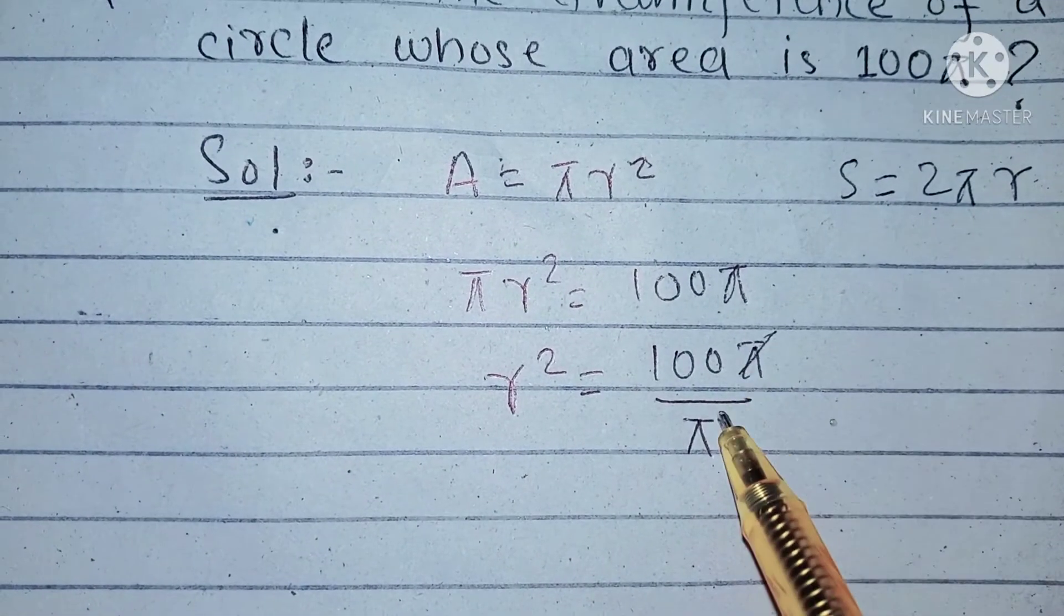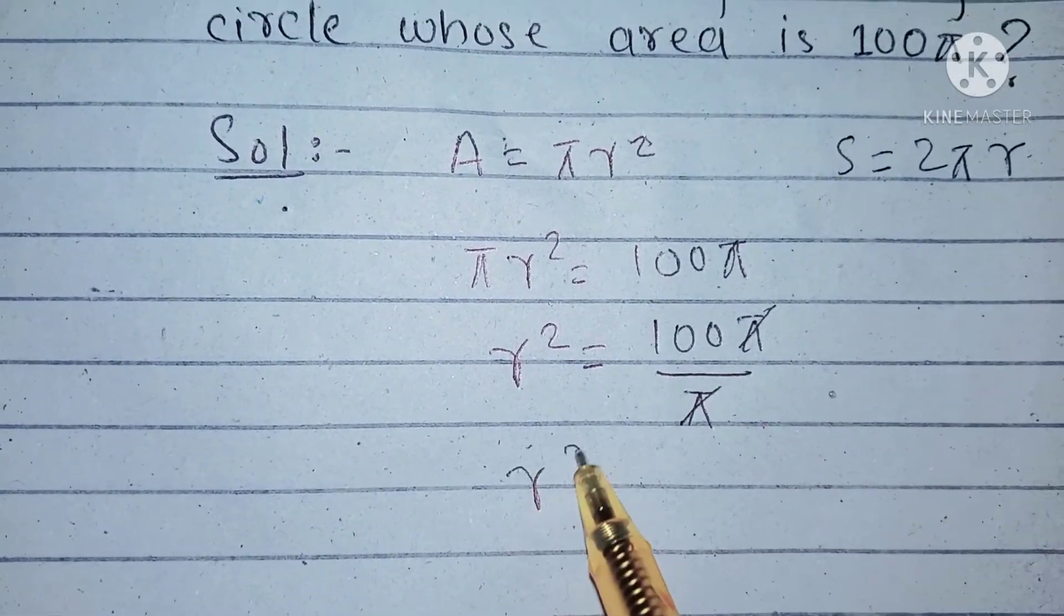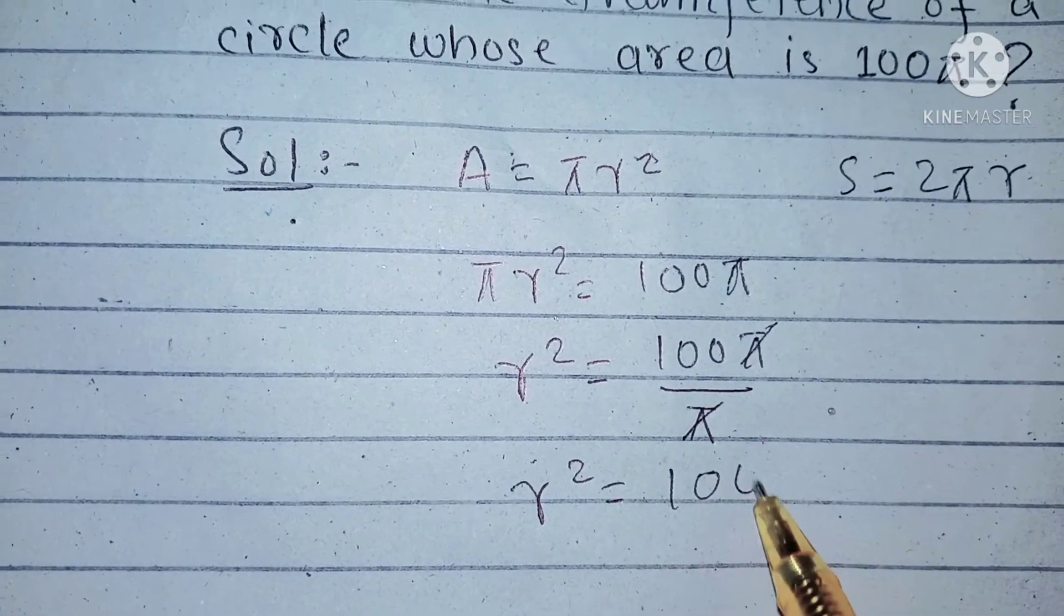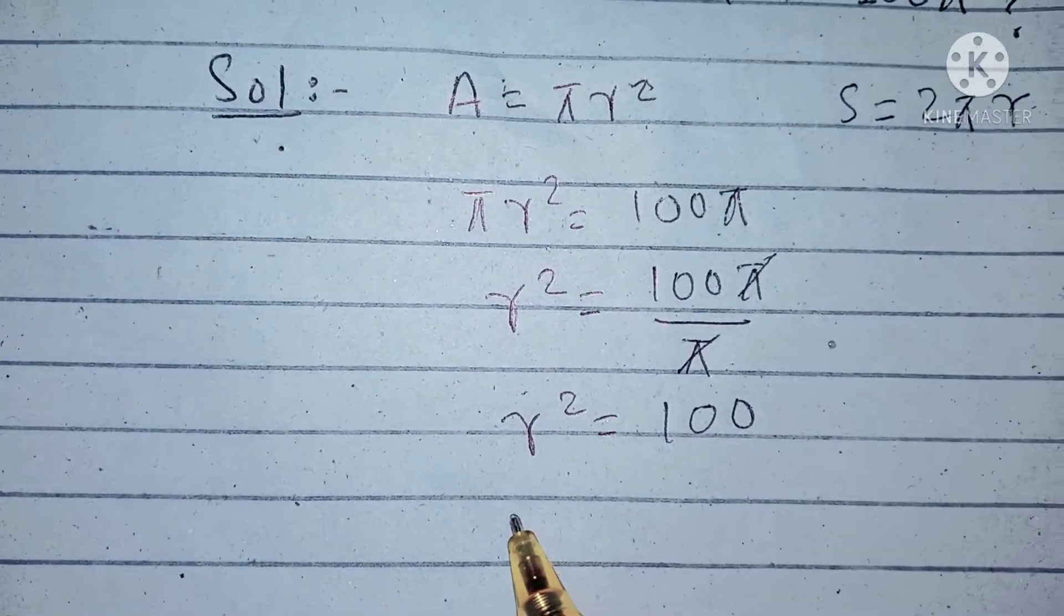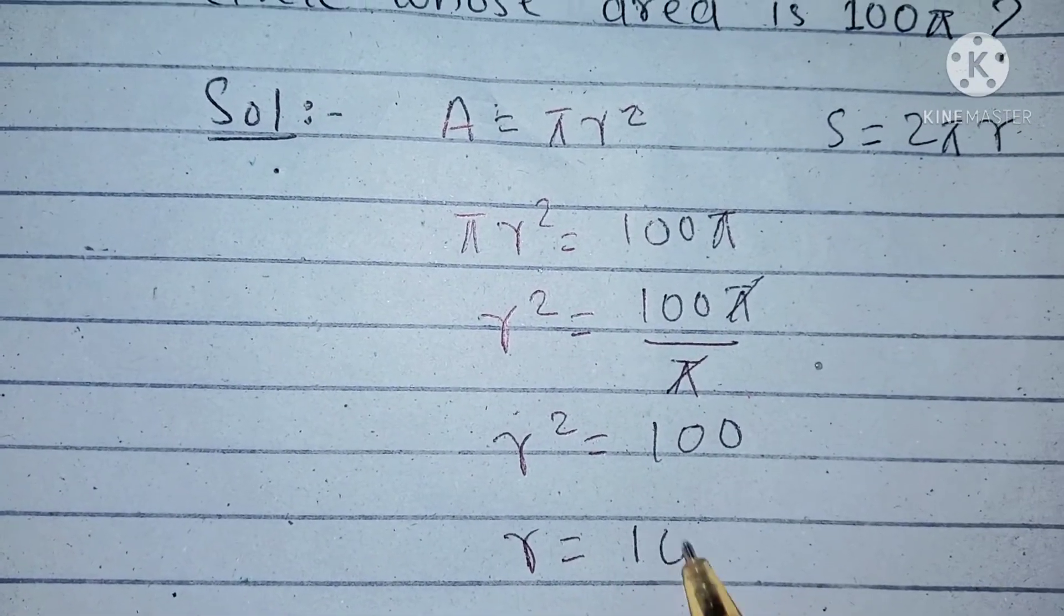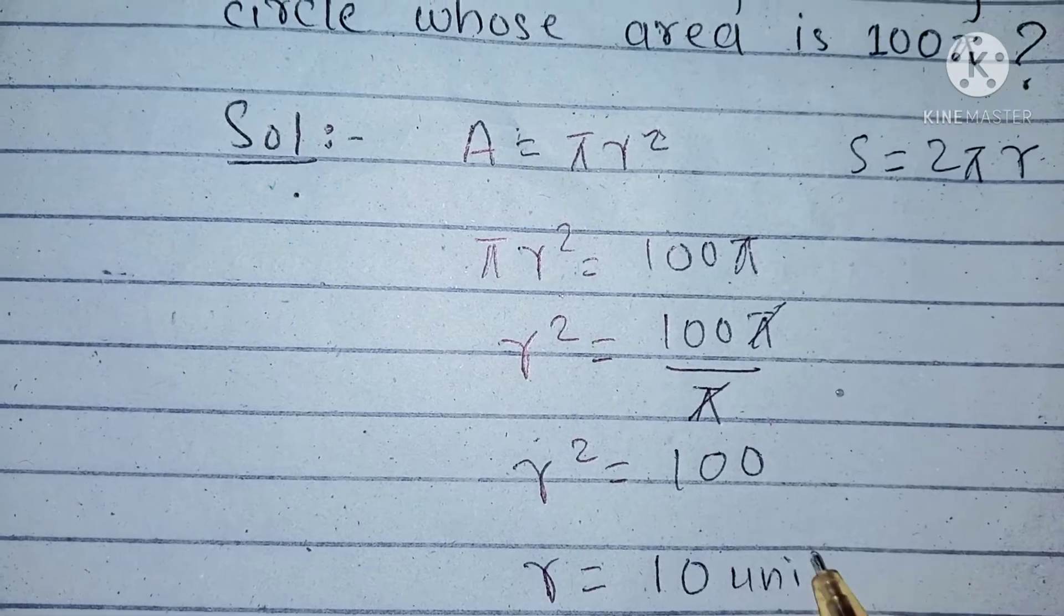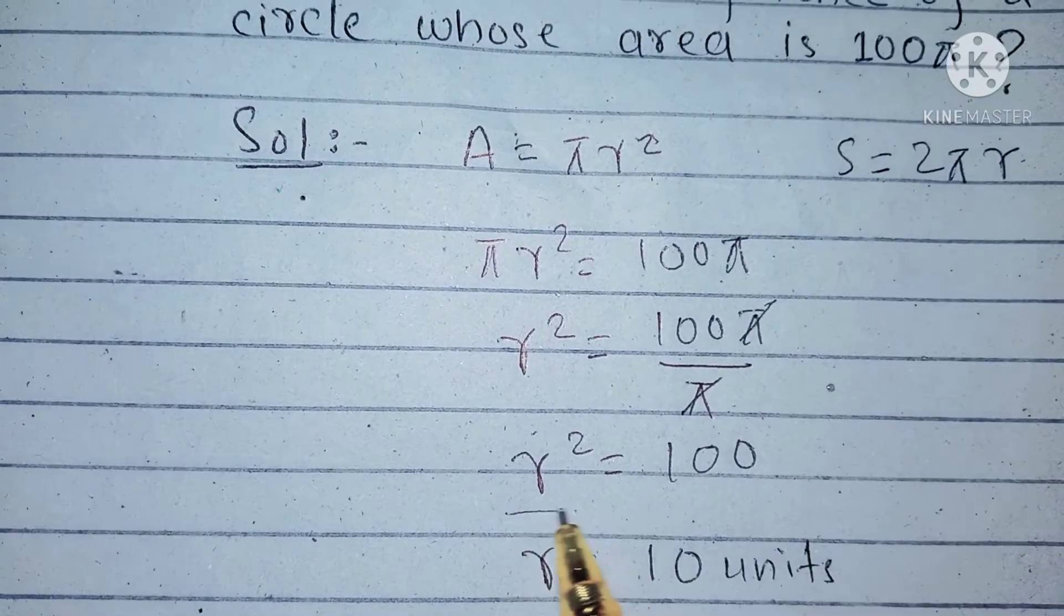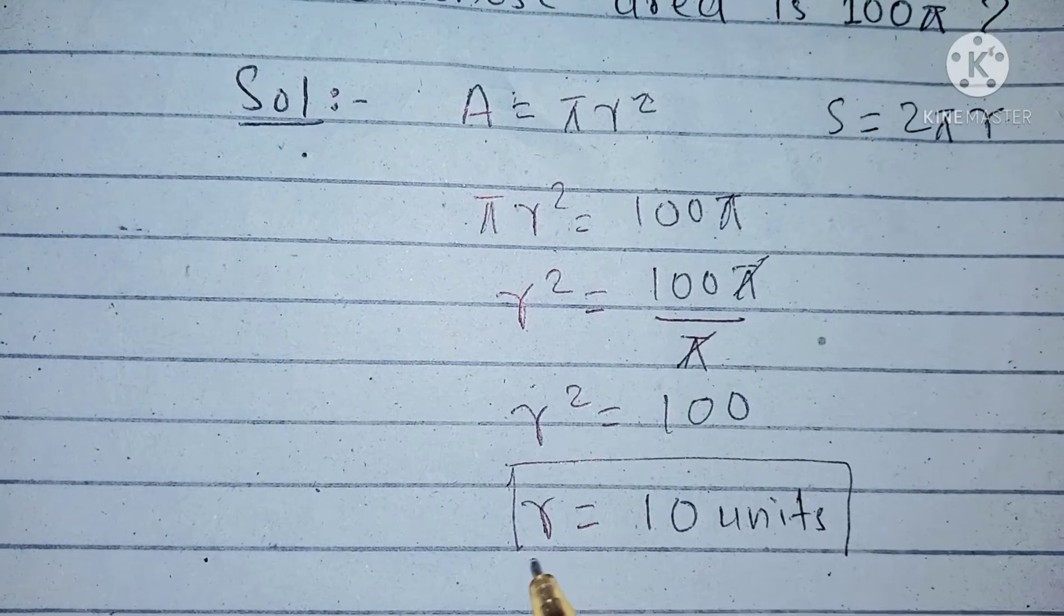So here π and π cancel and r² equals 100. Taking root on both sides, we can say that r equals 10 units. So we have found here that r equals 10 units. This is the value of r.